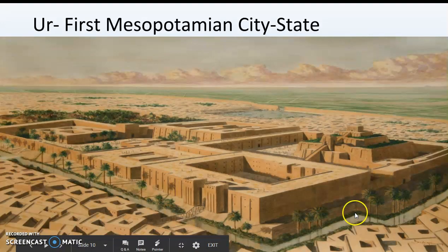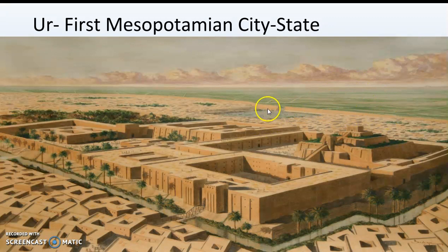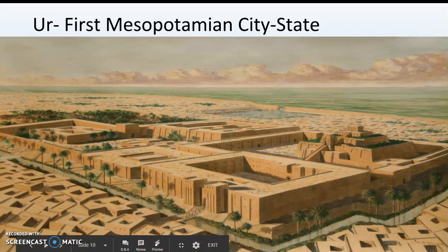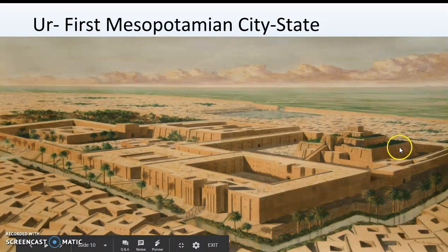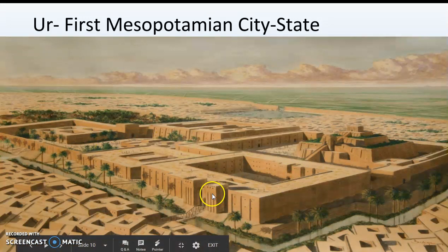Now we'll look at Ur, the very first Mesopotamian city-state. On the outside of Ur, the really green areas are the farms. Between the farmland and the city is a wall to keep out people trying to harm the residents. Inside the wall, there are lots of houses where the common people live — traders, merchants, farmers. In the middle is what looks like a river, but is actually a moat with bridges. Past those bridges are giant buildings — the government and head religious figures, a temple where priests live, and governmental buildings.